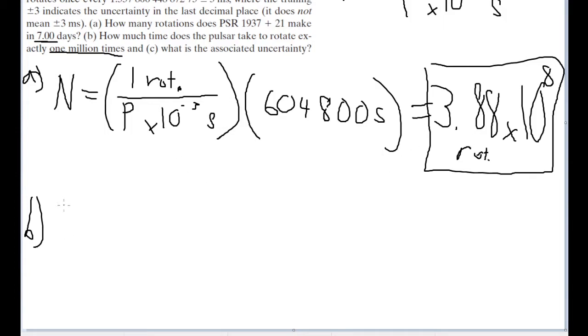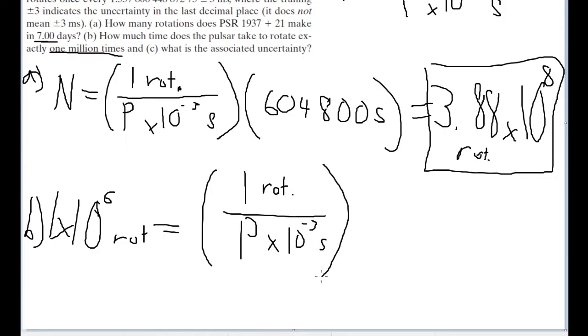So instead, we're going to set our little expression here equal to 1 times 10 to the 6th, because that represents a million. And we want a million rotations. So it's going to be equal to the same frequency of one rotation over P times 10 to the negative 3 seconds. And the whole thing is multiplied by the amount of time it'll take to yield that many rotations. So T, and that is our unknown.